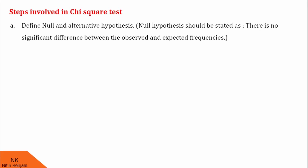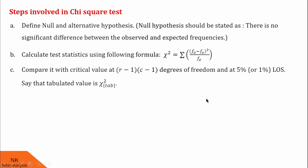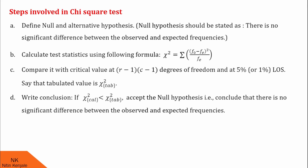In step 1, we define null and alternative hypothesis. Null hypothesis should be stated as there is no significant difference between the observed and expected frequencies. Then, in the next step, we calculate the test statistic using the formula chi-square is equal to summation (Fo minus Fe) the whole square upon Fe. In the next step, we compare this calculated value with the critical value at degrees of freedom (R minus 1) into (C minus 1) and at LOS 5%. Let us say tabulated value is chi-square tab. In the next step, we write the conclusion. If chi-square calculated value is less than chi-square tabulated value, we accept the null hypothesis.